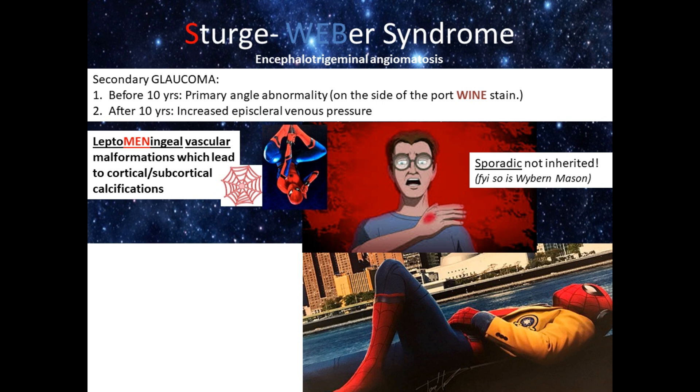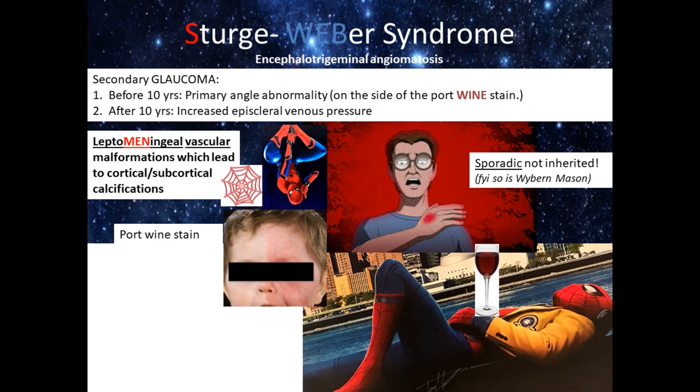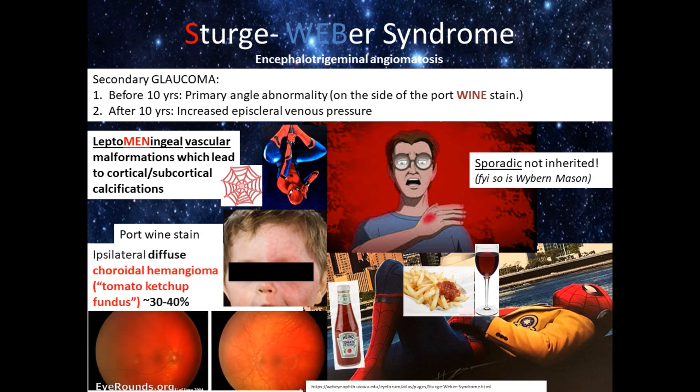Sturge-Weber is also associated with leptomeningeal vascular malformations, later causing cortical and subcortical calcification — so get an MRI and avoid contact sports. As mentioned, Sturge-Weber has the finding of port wine stains; just imagine Spider-Man drinking a glass of wine.